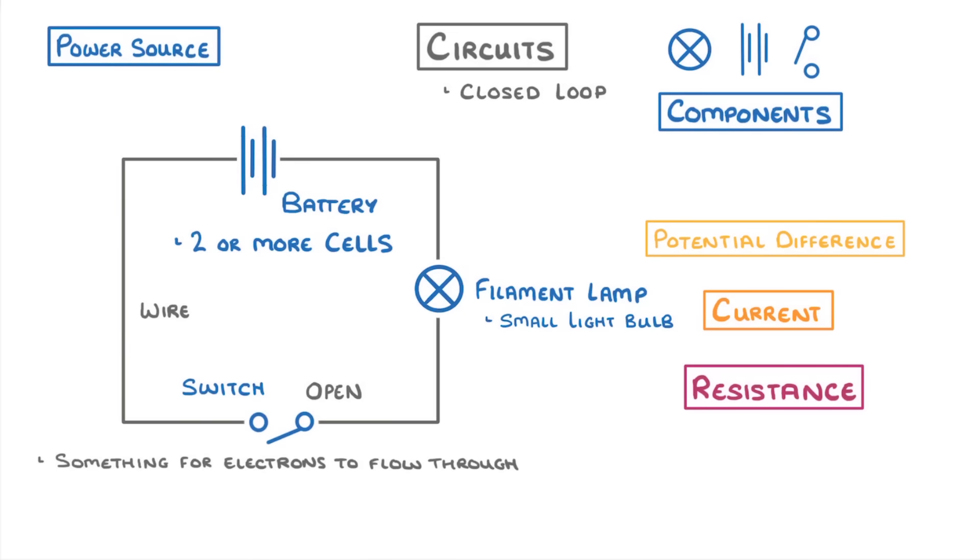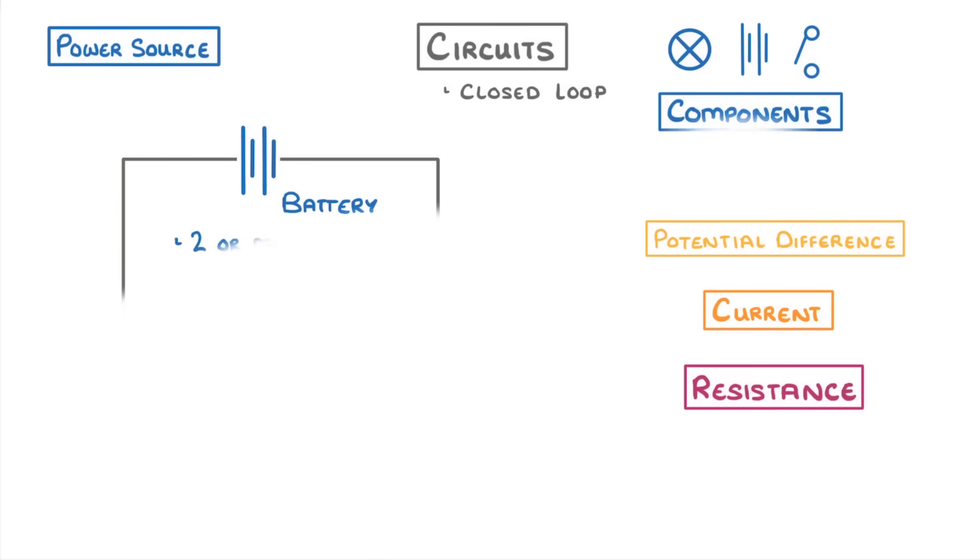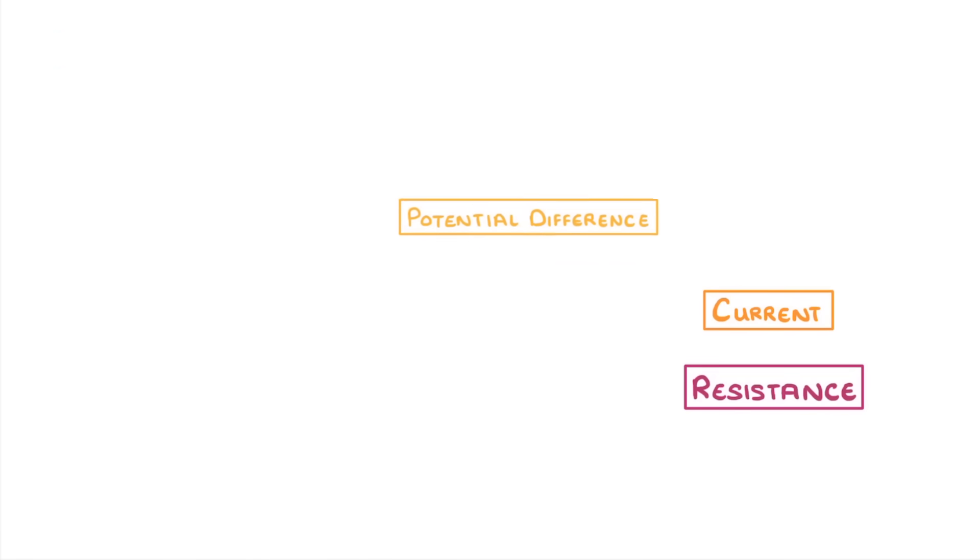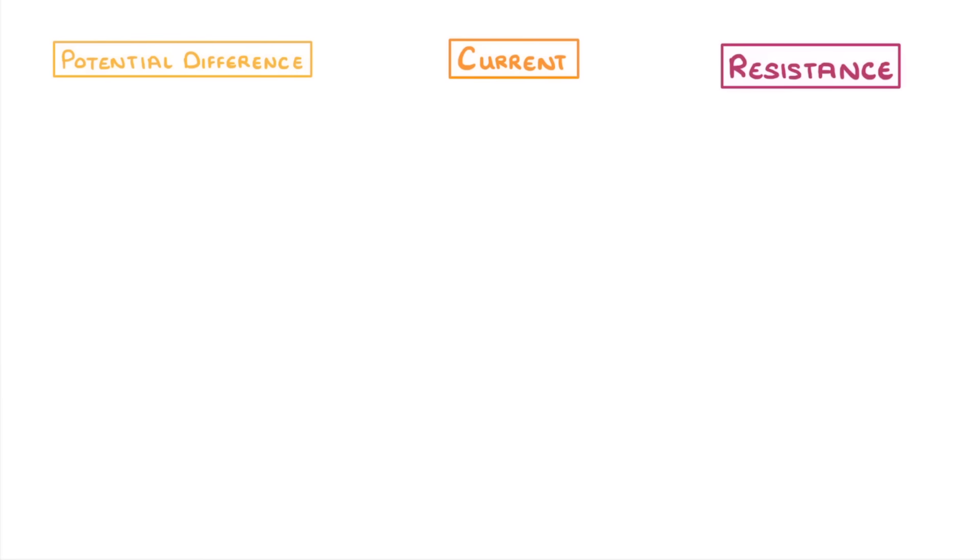In order to explain what's going on, we need to look at some key terms. Specifically, potential difference, current, and resistance.